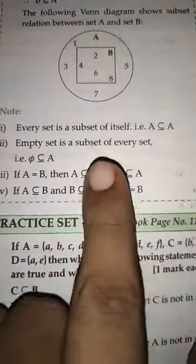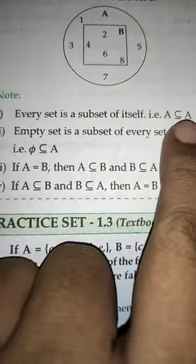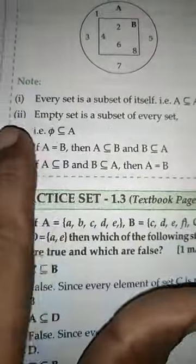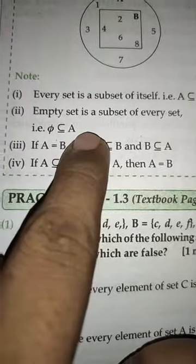Every set is a subset of itself, meaning A is a subset of A or B is a subset of B, C is a subset of C. Then an empty set is a subset of every set.